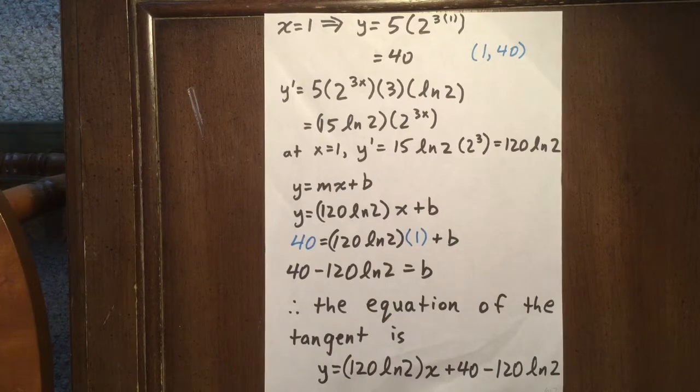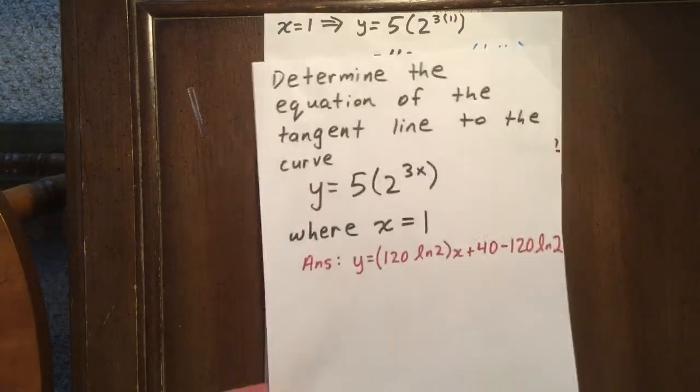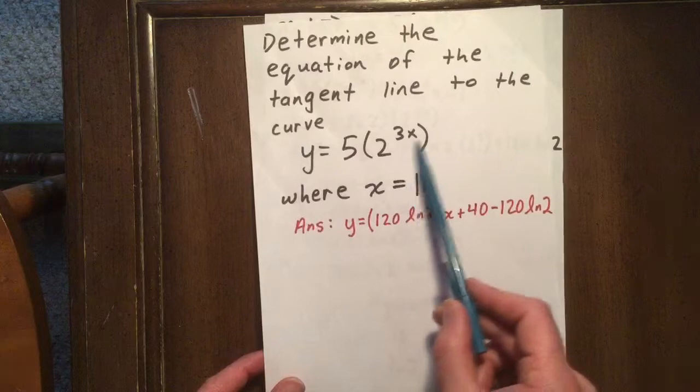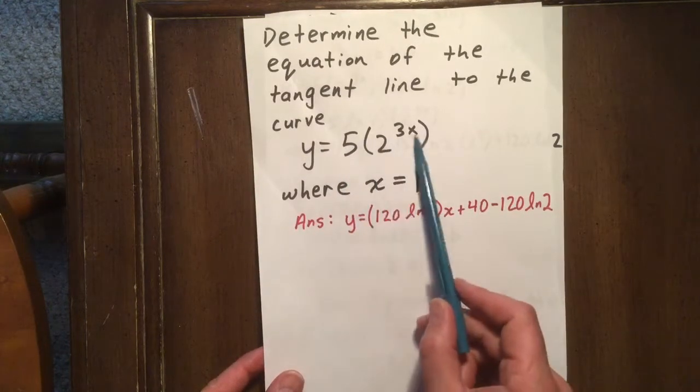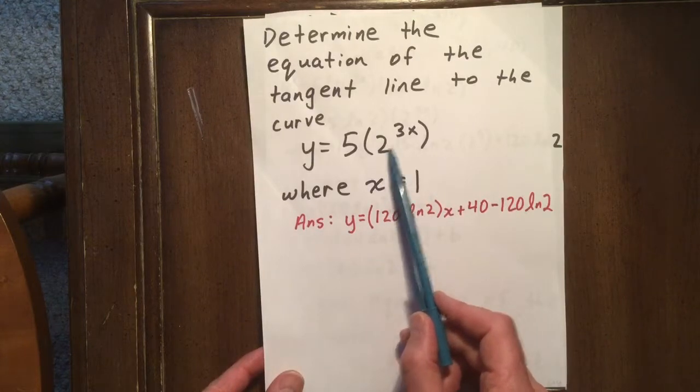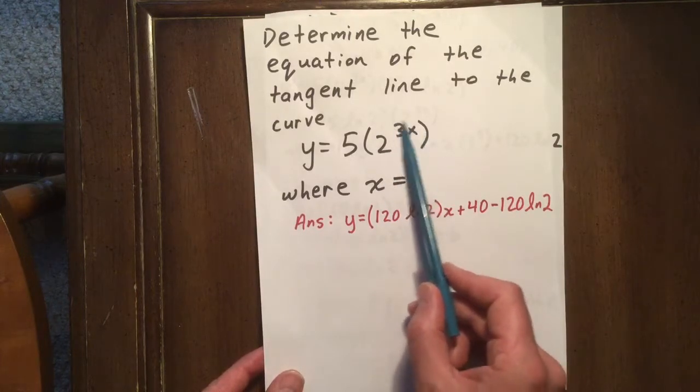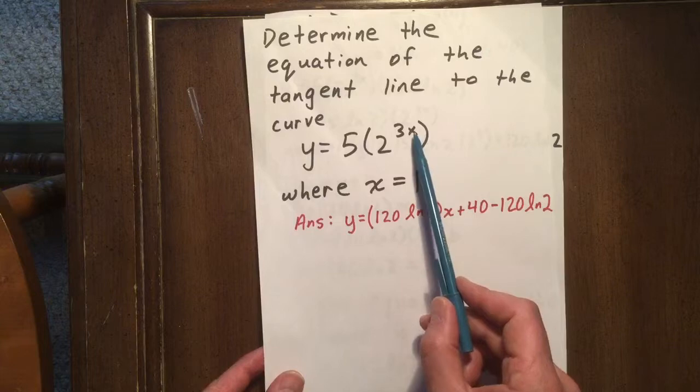Now we need to determine the derivative. The original expression is 5 times 2 to the 3x. So the derivative will be 5 times 2 to the 3x times the natural logarithm of 2 times the derivative of that exponent, which is 3.